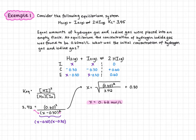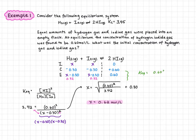To check our work, we find the equilibrium concentration for H₂ and I₂. At equilibrium, hydrogen gas is 0.32 moles per liter, as is iodine. Plugging into the Keq expression: 0.60 squared over 0.32 squared. We verify that we get approximately 3.5. There's some rounding, so it's slightly off, but we do get the correct answer — our work is verified.